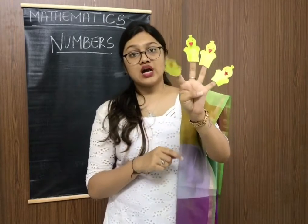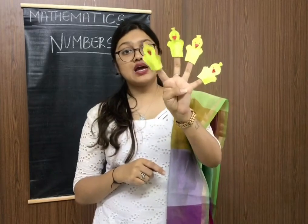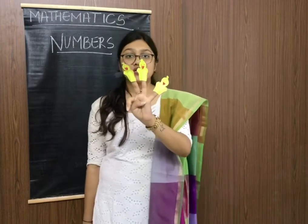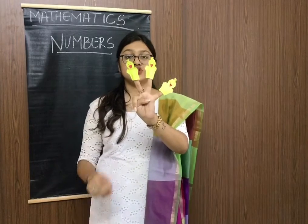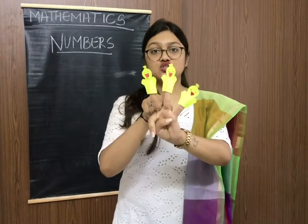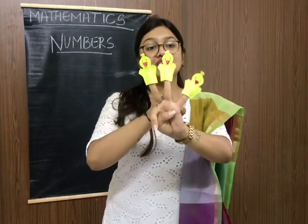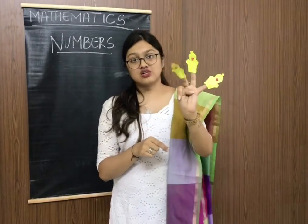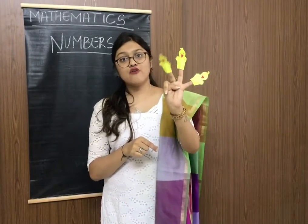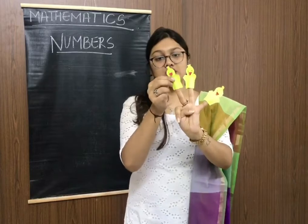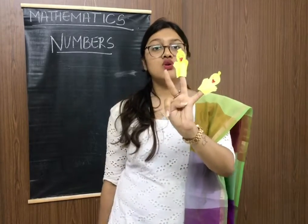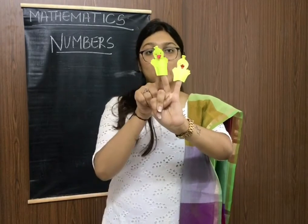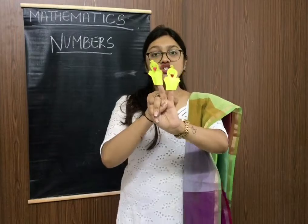One more duck flies away. So how many ducks are left? 1, 2, 3. This duck also flies away. So how many ducks are left? 1, 2.